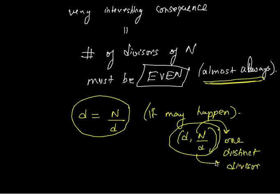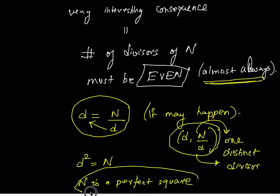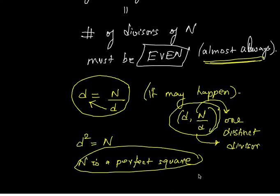Now when will this happen? This will happen when d squared is equal to n. Obviously, if you cross multiply you get that, which means when n is a perfect square. So when n is a perfect square, the number of divisors would be odd. This is a very simple example of logical reasoning in number theory and how prime factorizations can be used to find out simple properties of natural numbers, beautiful properties of natural numbers.